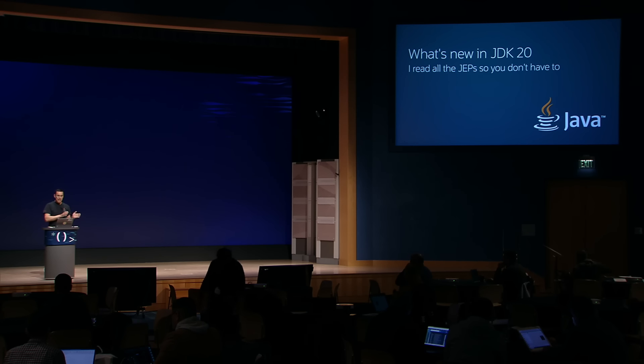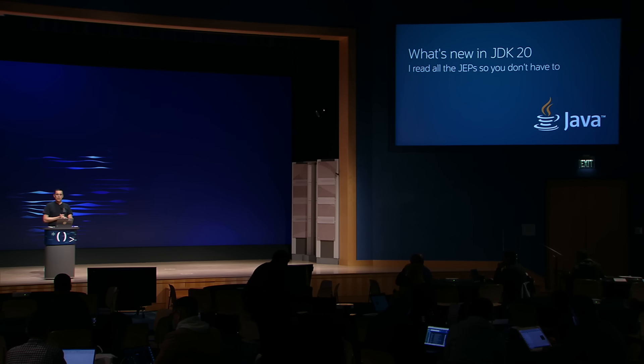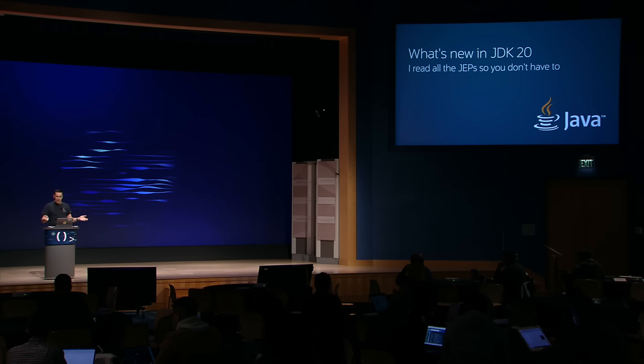Good morning, and thank you for those of you that joined us in person. It's been a while since I've had people in the room, so bear with me. Today, I'm going to talk about what's new in JDK 20. Now that we have a feature release every six months, part of my job is to go about and tell you about the JEPs and what has been added. I'll read all of the JEPs and condense them so that you don't have to read them — you can just hear this session and then decide which ones you want to learn more about.